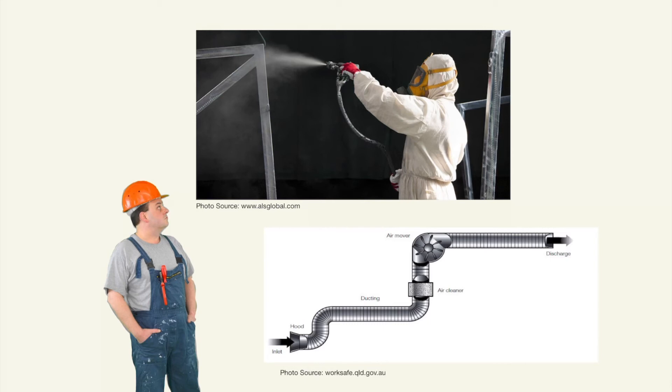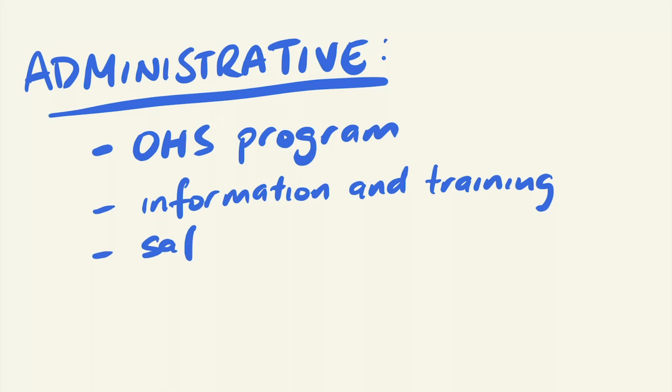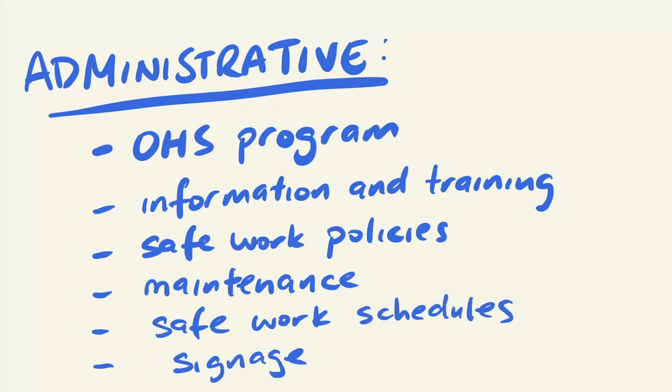Now as we move further down the hierarchy of controls, we find controls which may not be as effective as the ones previously mentioned, but are much easier to implement. Administrative controls includes changes to work methods or procedures to minimize exposure to a hazard at work. Examples include having an occupational health and safety program where support is provided to managers and workers. Having information and training of workers on health and safety at work. Having work policies which promote safe work practices. Regular maintenance schedules of equipment. Safe work schedules which limits the time that workers are exposed to a hazard at work. And finally signage to warn of hazards at work.